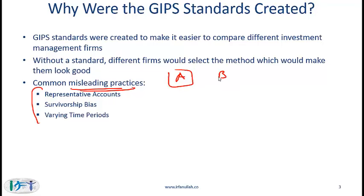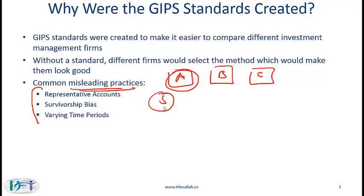Consider three different investment management firms, each of which is not GIPS compliant. What firm A might do is pick five accounts out of, say, 50 that are managed, and pick those five based on the ones that have performed the best over the last few years. By presenting performance related to only these five accounts and not the remaining ones, firm A will be overstating its performance record, which is clearly misleading.